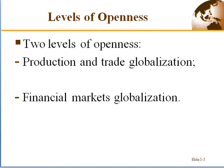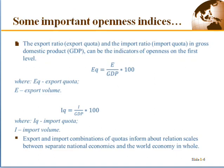There are some indices we use in measuring economic openness, and it is important that you acquaint yourself with how to calculate these indices. The first one is the export quota. Export quota is calculated using the exports of the country divided by the GDP, times 100, because it is expressed in percent.